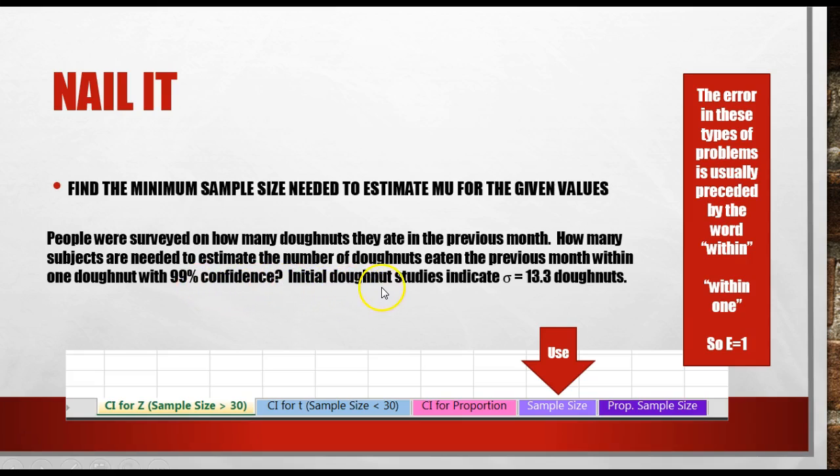Initial doughnut studies indicate that sigma equals 13.3. Notice on these problems, the error in these types of problems is usually preceded by the word within. Within one doughnut. So, E is equal to 1. Let's do this one.